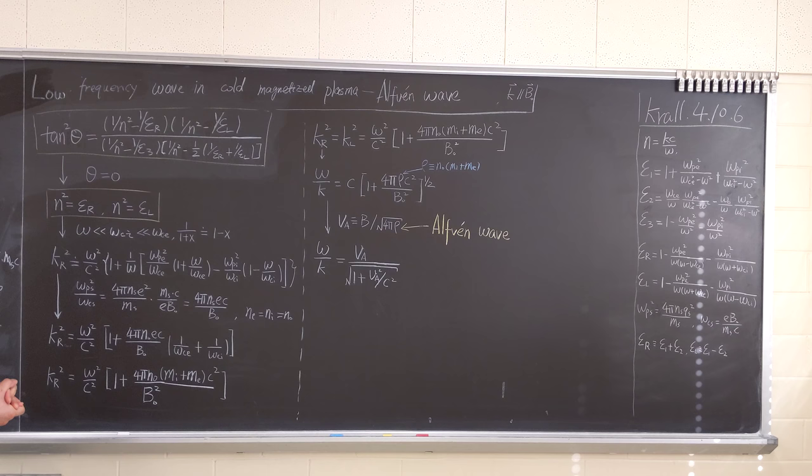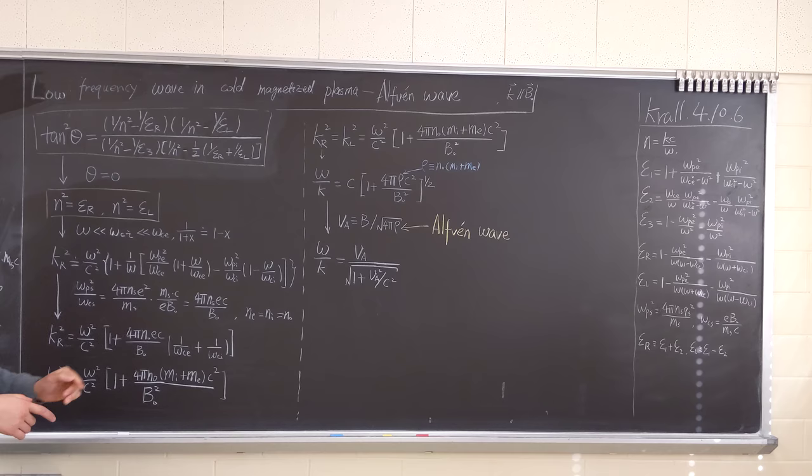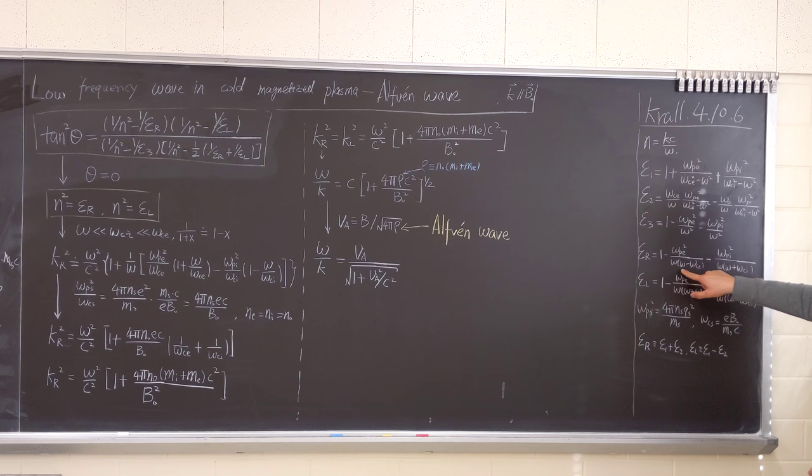The same deal, set it equal to zero, and we'll get two equations. And we at this time assume that the frequency is low, much lower than the ion cyclotron frequency. We use this approximation: 1 over x, for small x, is approximately 1 minus x.